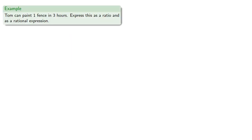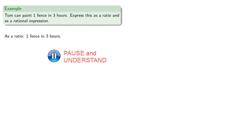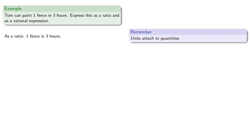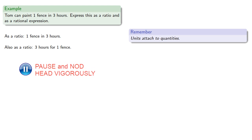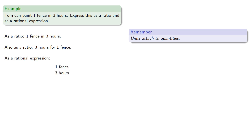For example, suppose Tom can paint a fence in three hours. Express this as a ratio and as a rational expression. As a ratio, this is one fence in three hours. Remember, units attach to quantities, so we could also express it as three hours for one fence. As a rational expression, this could be one fence divided by three hours, or also three hours divided by one fence.